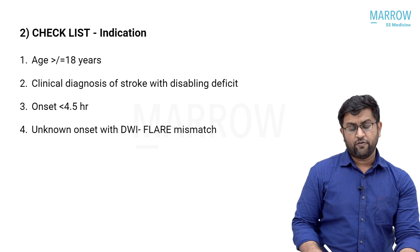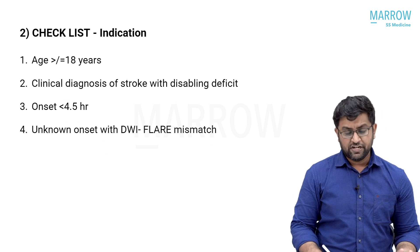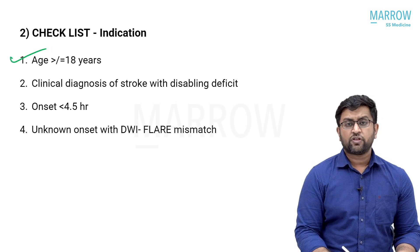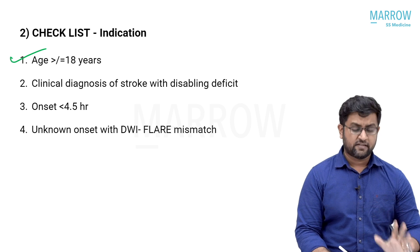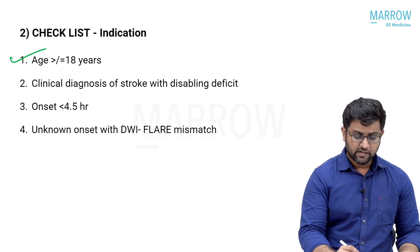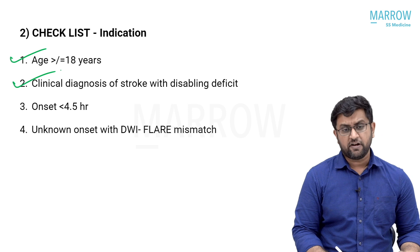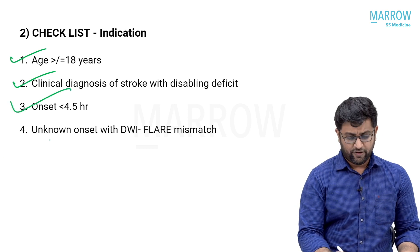Checklist before your lysis, there's an indication. Indication basically three things: age more than 18 - no pediatric group, no lysis indication. Pregnant lady, no different indication. Clinical diagnosis of stroke with disabling deficit. Onset less than 4.5 hours.